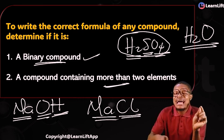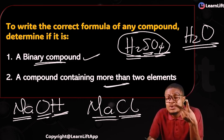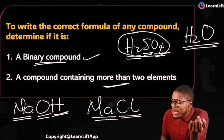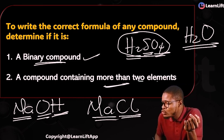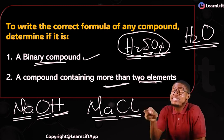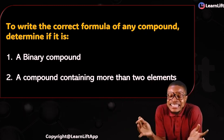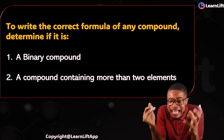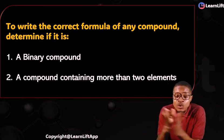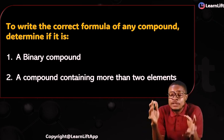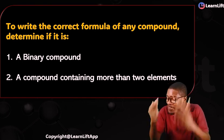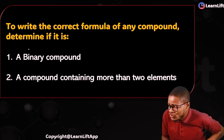A binary compound is a compound that contains two elements only. The way we write the chemical formula of a binary compound is totally different from the way we write for a compound that contains more than two elements.